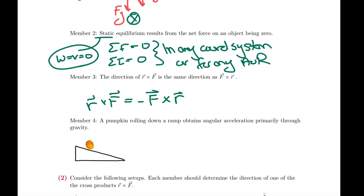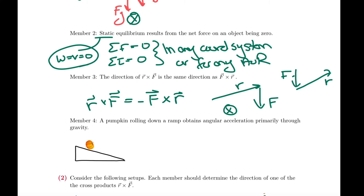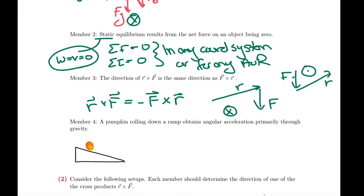The cross product does not commute. You can see this by the right-hand rule. If you take R cross F: fingers point along R then sweep toward F, giving a cross product into the page. If instead you do F cross R: fingers along F then sweep toward R, the cross product points out of the page. Same magnitude, opposite direction — the cross product is anti-commutative.